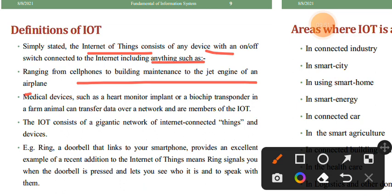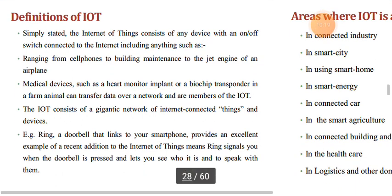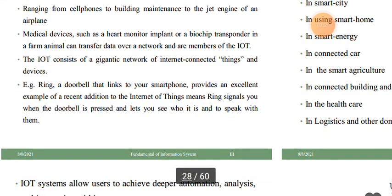IoT devices include anything with an on/off switch connected to the internet. Examples include medical implants that monitor patients, bio-chip transponders on farm animals that transfer data over a network — all members of the IoT. IoT consists of a gigantic network of internet-connected things and devices.